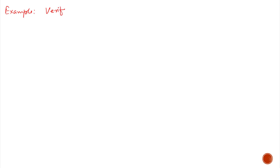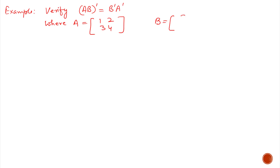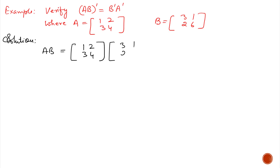Example 1: Verify that (AB)ᵀ equals BᵀAᵀ, where A is a 2×2 matrix with elements 1, 2, 3, 4 and B is a 2×2 matrix with elements 3, 1, 2, 6. First we multiply A by B. Since both are 2×2, the result is also 2×2. After calculation we get 7, 13, 17, and 27.